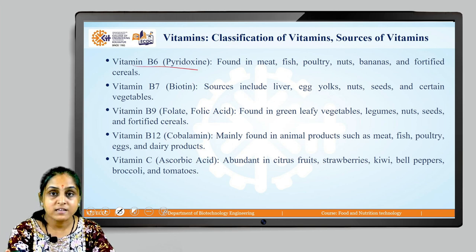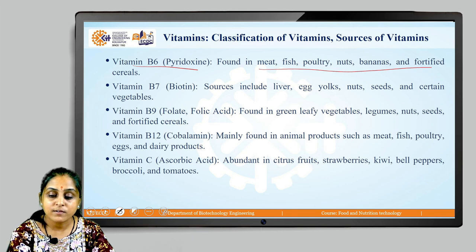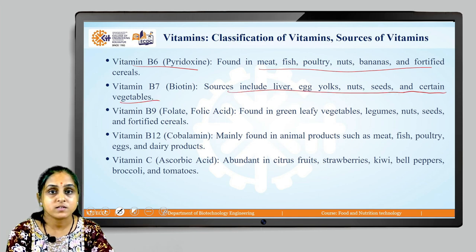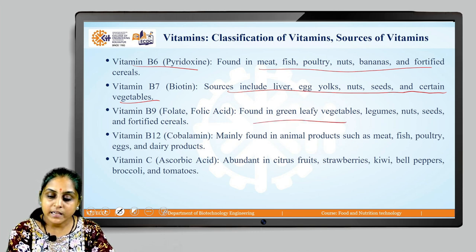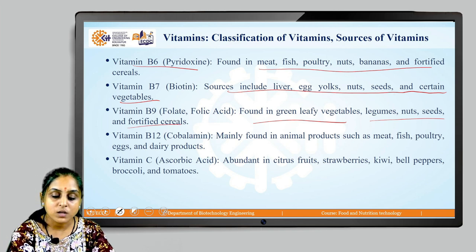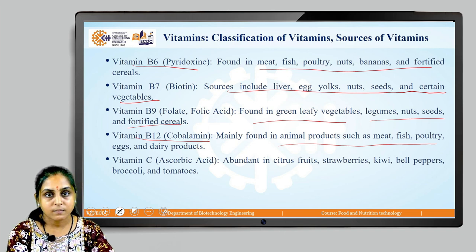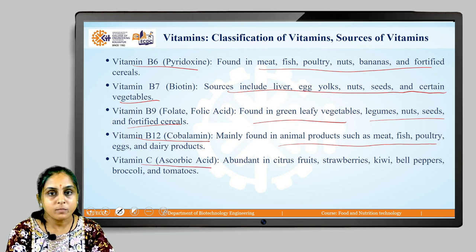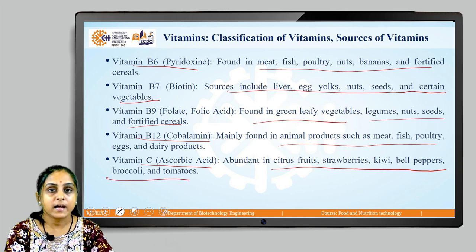Vitamin B6, known as pyridoxin, is found in meat, fish, poultry, nuts, bananas, and fortified cereals. Vitamin B7, known as biotin, has sources including liver, egg yolk, nuts, seeds, and certain vegetables. Vitamin B9, known as folic acid or folate, is found in green leafy vegetables, legumes, seeds, nuts, and fortified cereals. Vitamin B12 is found in animal products such as meat, fish, poultry, eggs, and dairy products. Vitamin C, known as ascorbic acid, is abundant in citrus fruits, strawberries, kiwi, bell peppers, broccoli, and tomatoes.